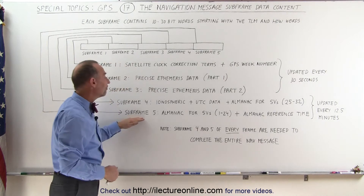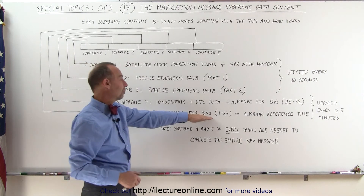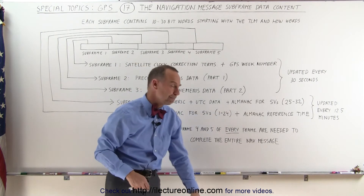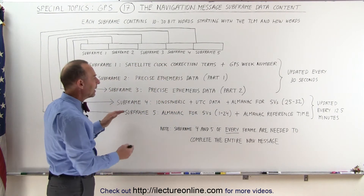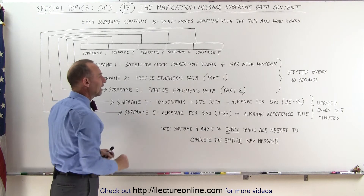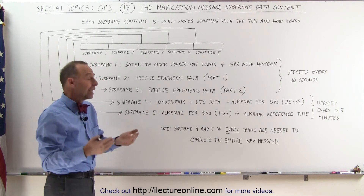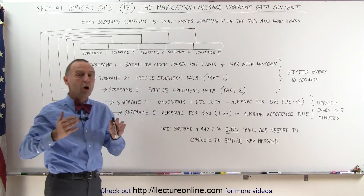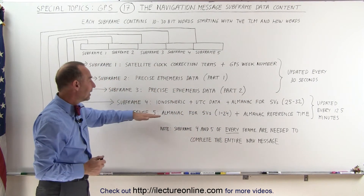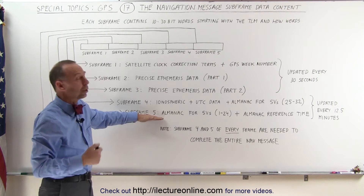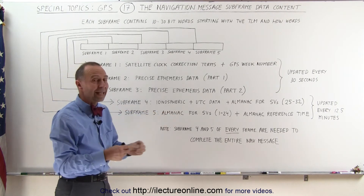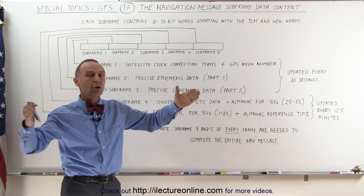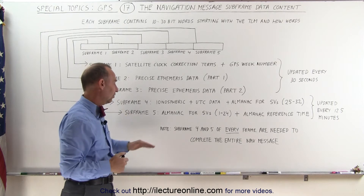Subframe 5 contains almanac data for space vehicles 1 through 24, plus it also contains the almanac reference time. Every frame cannot contain all the information of all the space vehicles, so it is stretched out over all 25 frames, and the data is then renewed every 12 and a half minutes. Every frame contains different information about the space vehicles, but all 25 frames together make up the entire message.